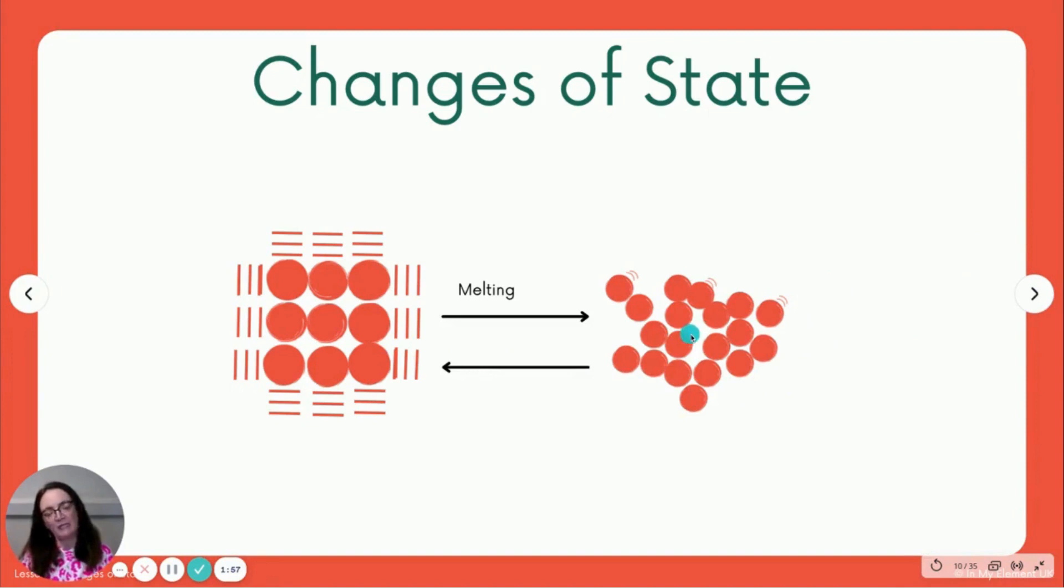If we're going back the other way, if we've got a liquid like water and we want to turn it into a solid, so we want some ice cubes, we will freeze it. So that process is known as freezing.